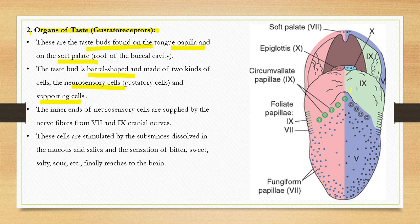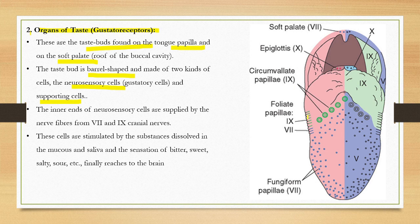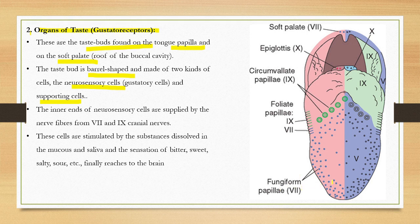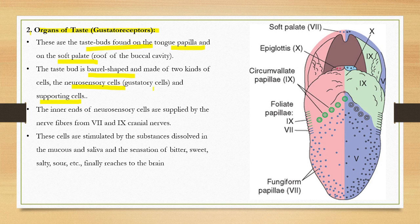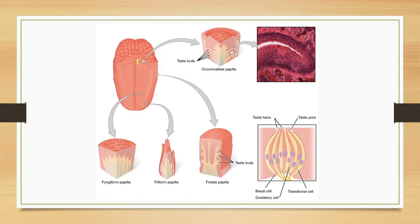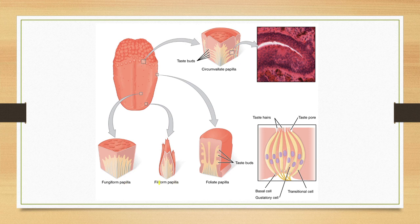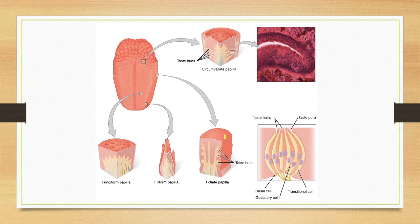You can see different types of taste buds around. Circumvallate papillae, foliate papillae, and fungiform papillae. There are different types of papillae. Taste buds have two types of cells: neurosecretory cells and gustatory cells, and supporting cells.